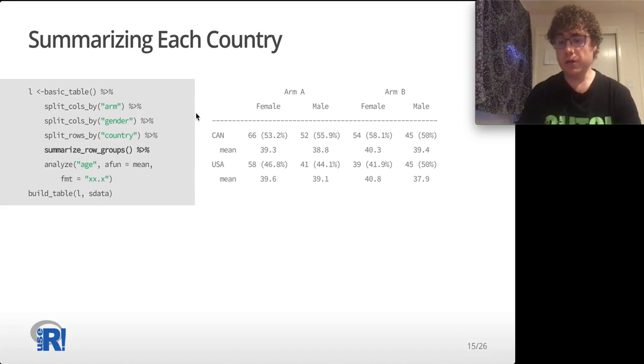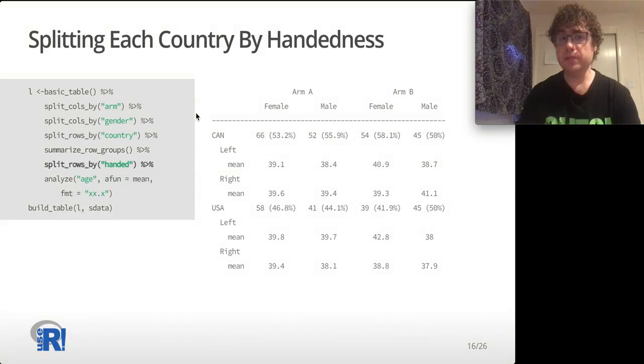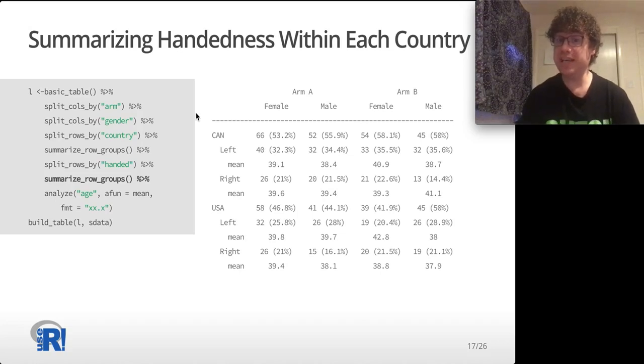Now we're going to say we want to split each country by handedness. We can split each country by handedness and the summaries of each country remain there, and that aspect of the layout doesn't change, but within each country we're now splitting on left-handed and right-handed. So now we have this multi-faceted splitting in both the column and row directions, and it's still the same, all we have to do is say analyze and everything just happens. And then we can further summarize each handedness within each country, so now we have multiple levels of summary at different levels of splitting in row space.